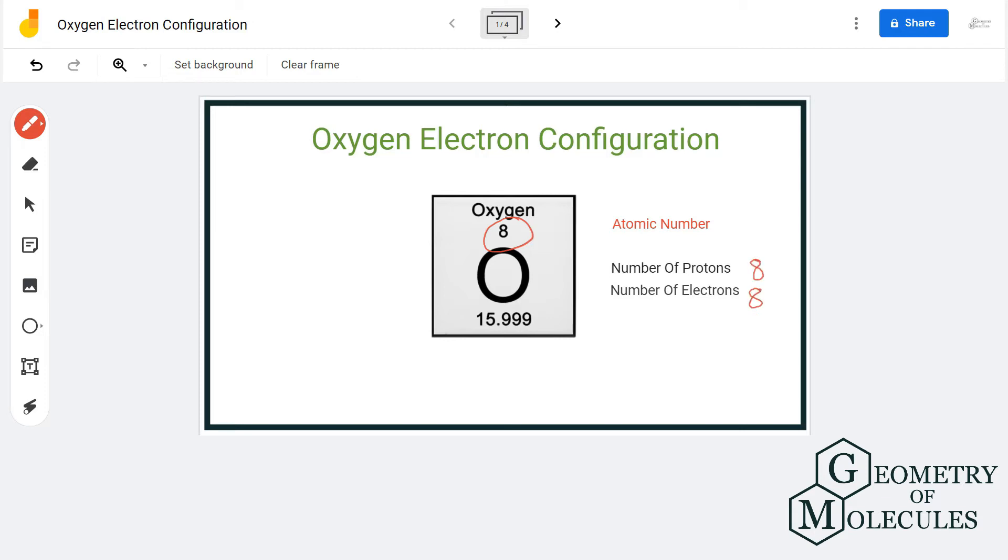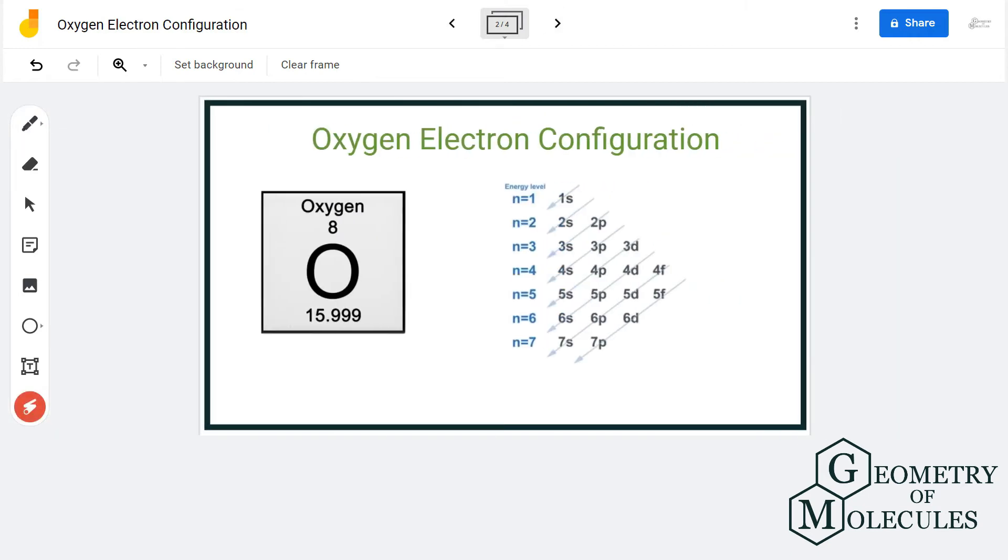So we have the total number of electrons for oxygen, which is eight. Now using the electron configuration chart, we will find out its electron configuration. Each s orbital can hold up to two electrons, and the first electron will go into the 1s orbital. As it can hold up to two electrons, we will first write 1s².